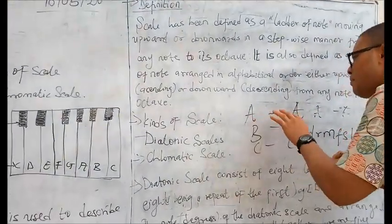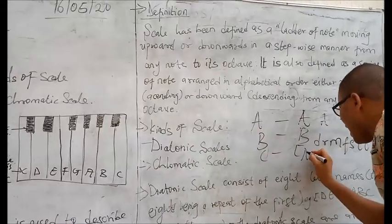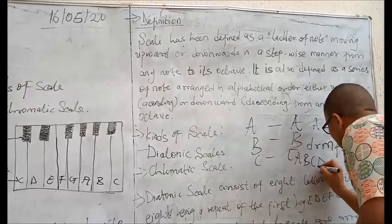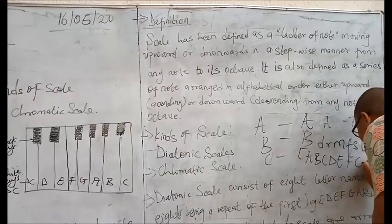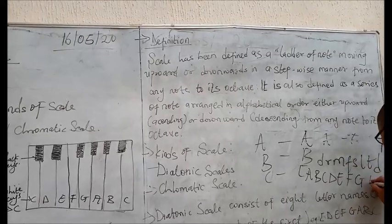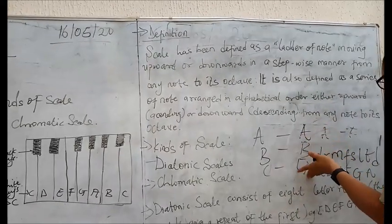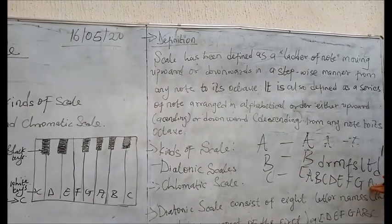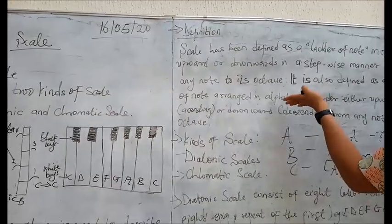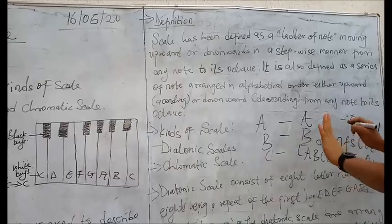Assuming if I'm representing it with A, it will be A, B, C, D, E, F, G. You know we don't have key H, so we go back to key A. From A to A, from the tonic to the octave. That is what it means.